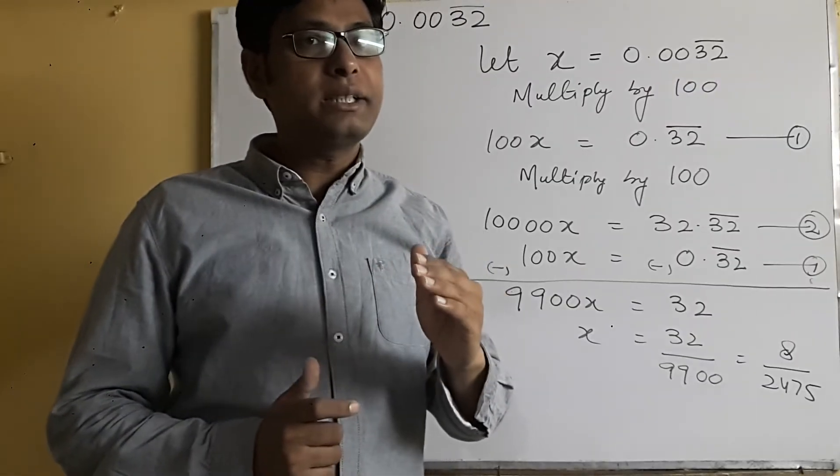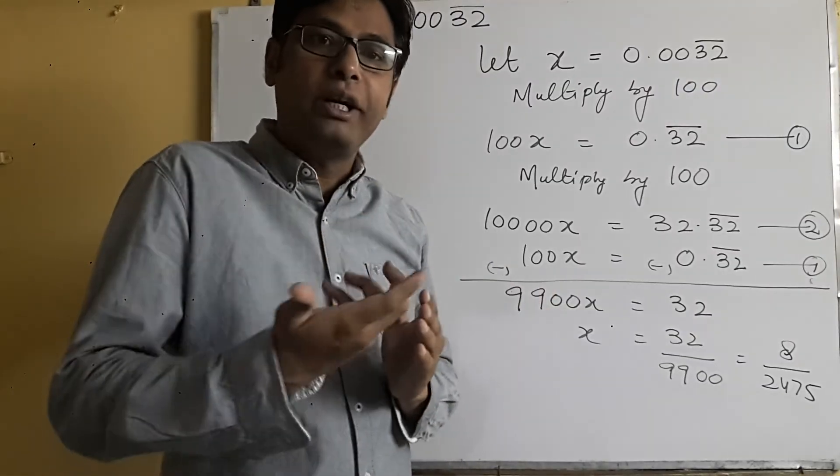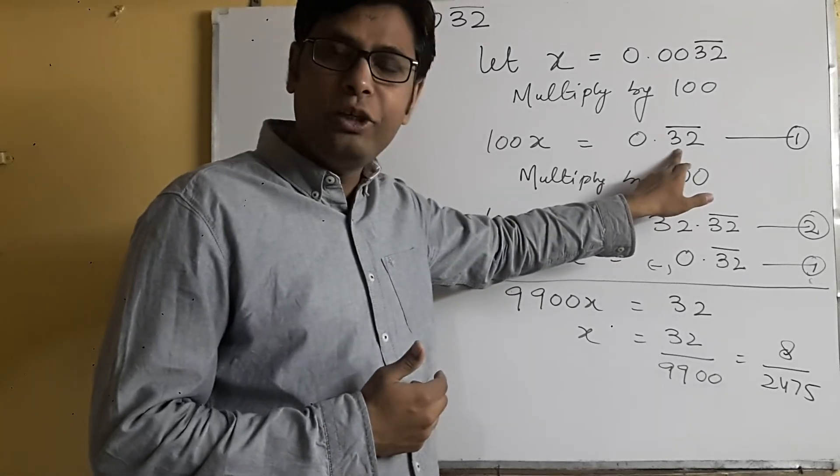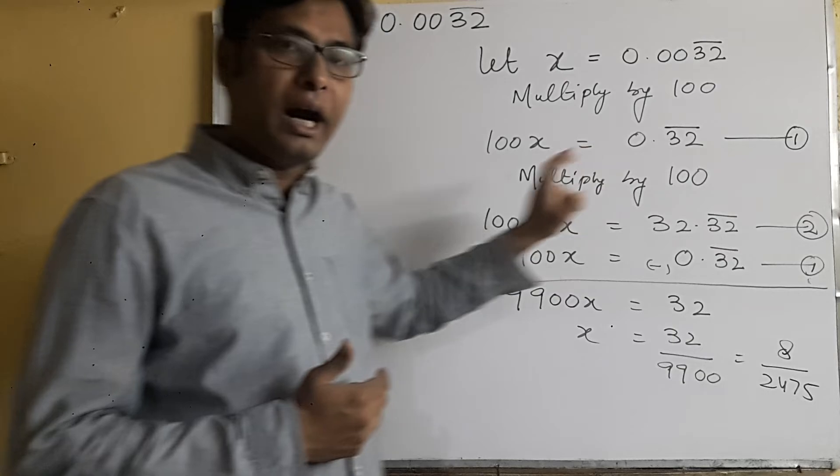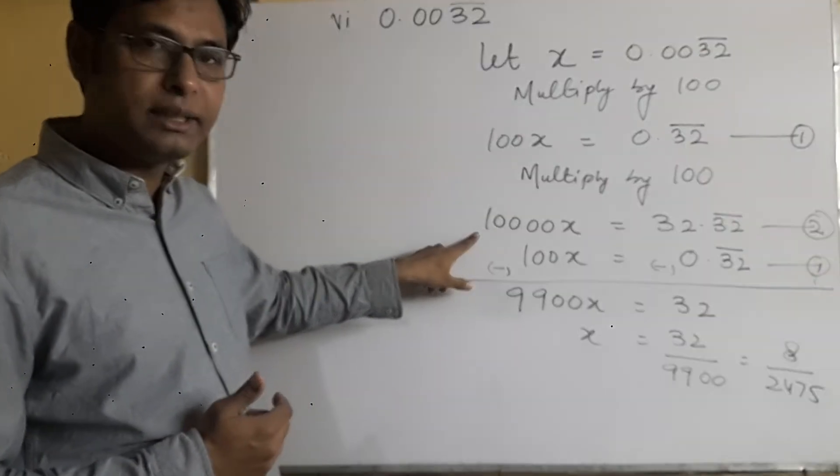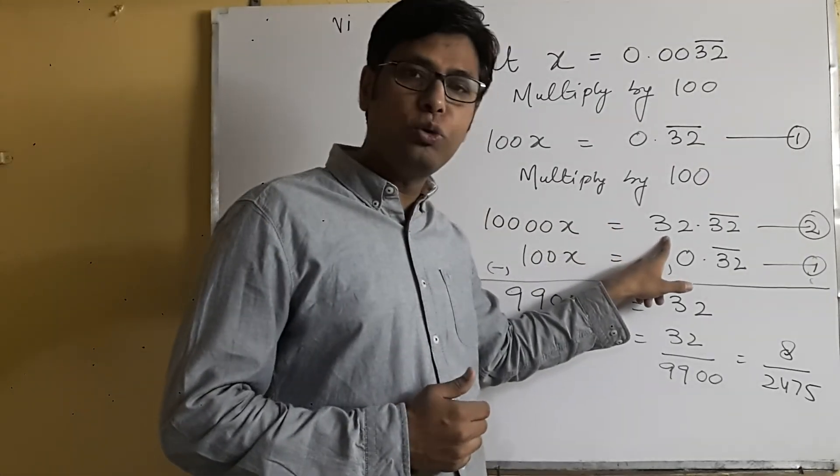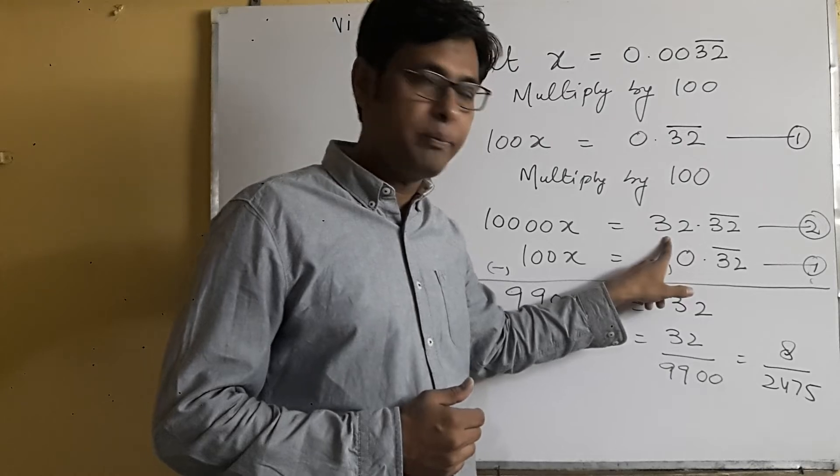Now we will see how many digits with bar. The bar is there, how many digits? So there are again two digits. So we will again multiply by 100 and this will become 10,000x and this will become 32.32 bar. This is our second equation.